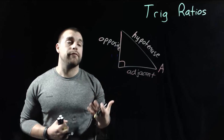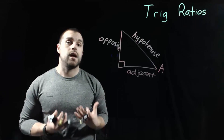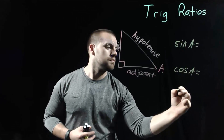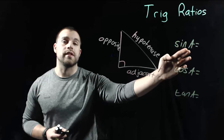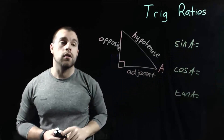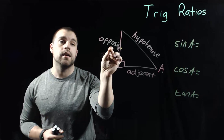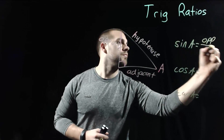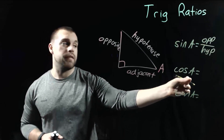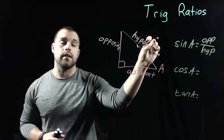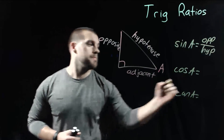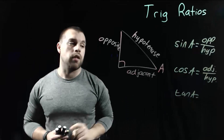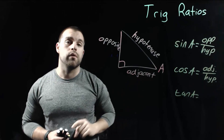There are three different trig ratios that we can set up based on these angles. The first is called the sine. The sine of angle A is the opposite side over the hypotenuse. The cosine of angle A is the adjacent side over the hypotenuse. And the tangent of angle A is the opposite side over the adjacent.